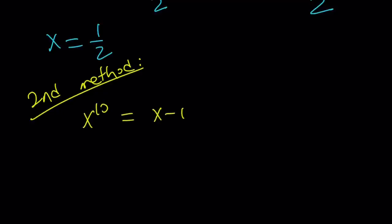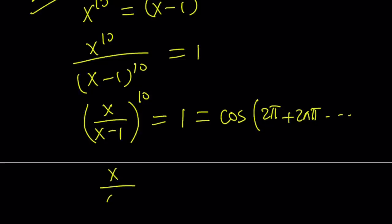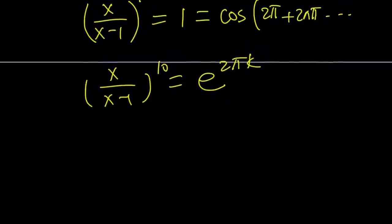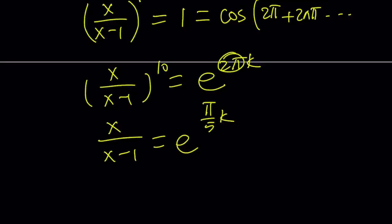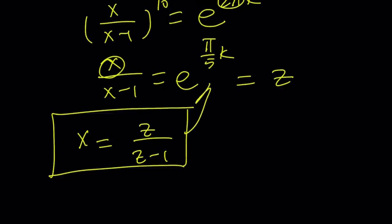So we have x to the tenth equals x minus 1 to the tenth. Now divide both sides by x minus 1 to the tenth and set it equal to 1. And then now you can write this as x over x minus 1 to the tenth power equals 1. And now we can write this expression as Euler's formula allows us, or you can write it in a more compact form as e to the power 2 pi k. And then to find the tenth roots, you're basically going to divide this by 10, which means it's going to be e to the power pi over 5k. And you're just going to replace k with different values, and that's going to give you all the answers. And if you set this equal to z, then from here you can solve for x and say x can be written as z over z minus 1, where z is the tenth roots of 1.